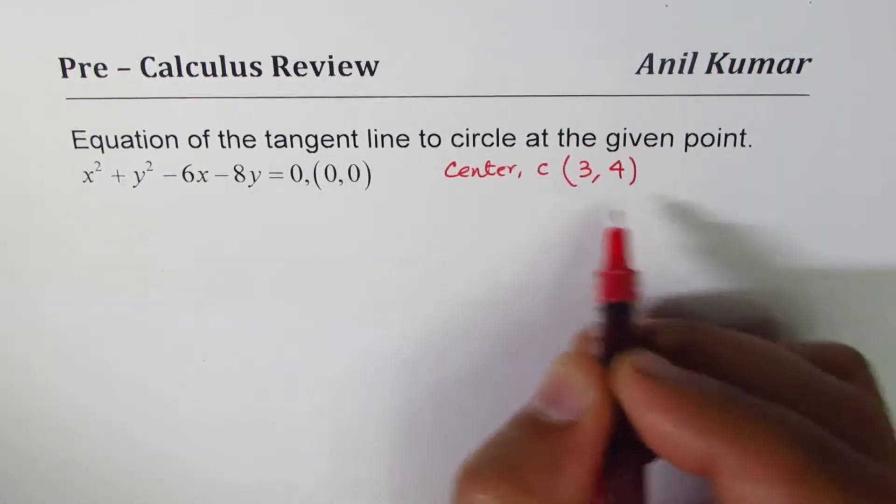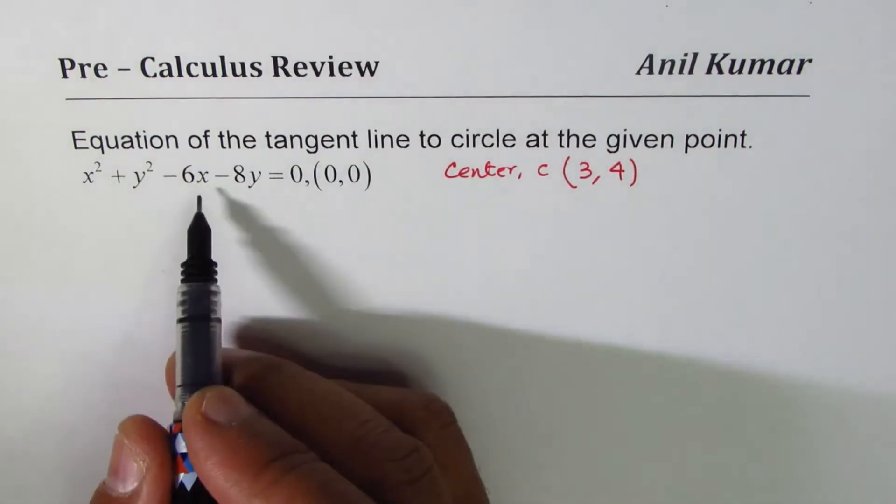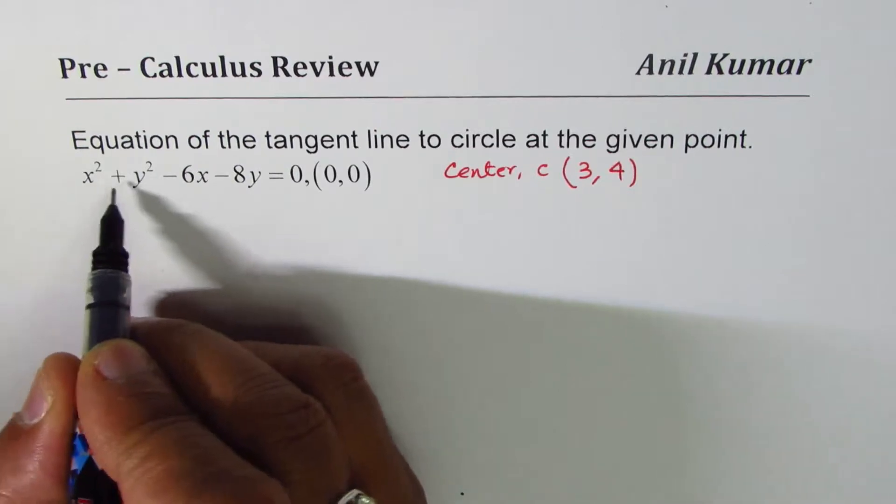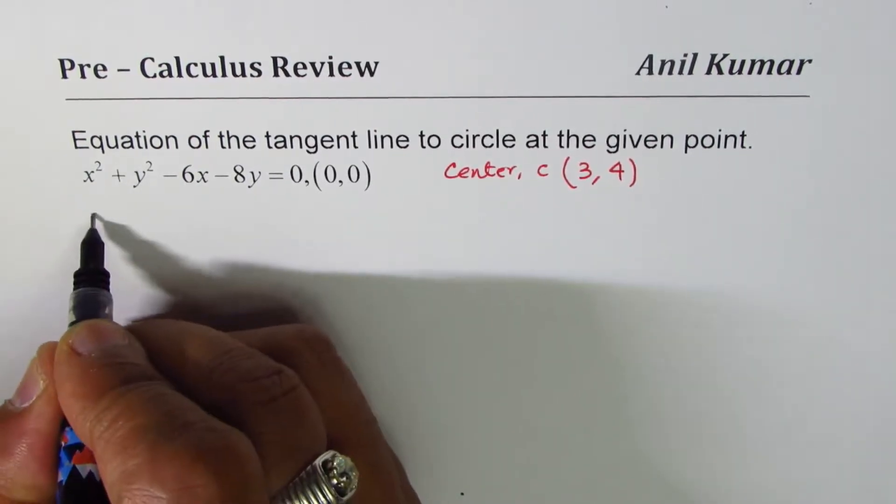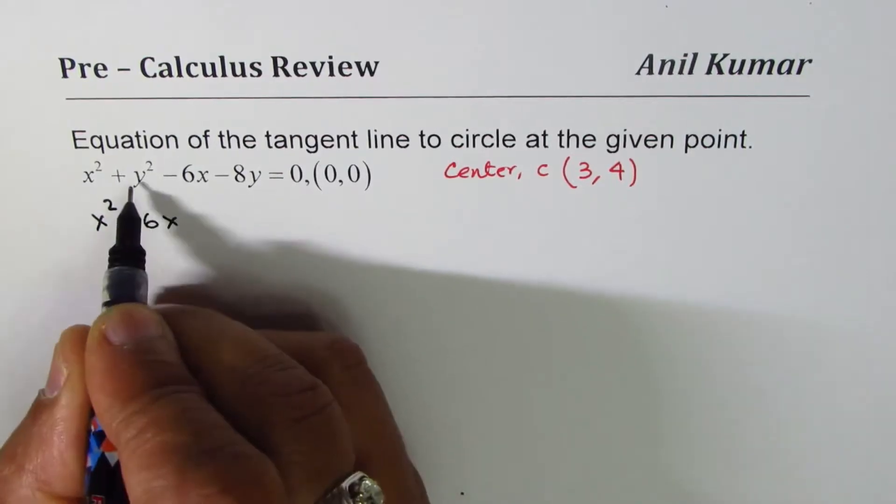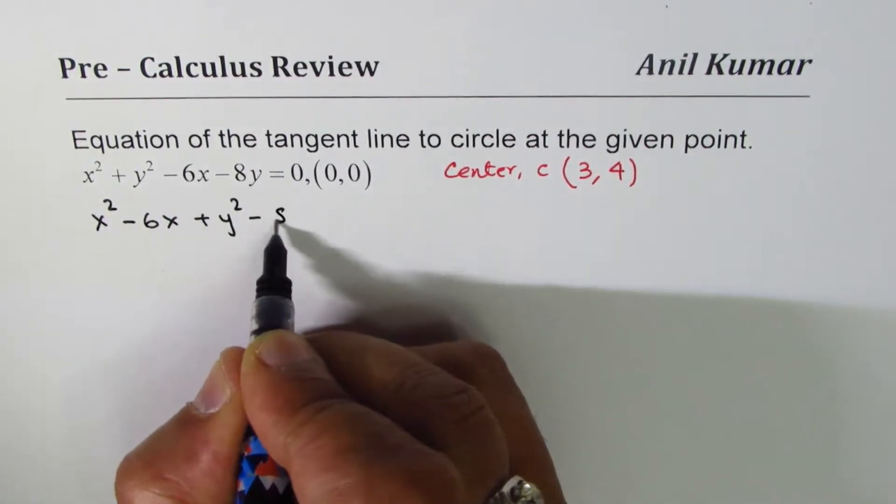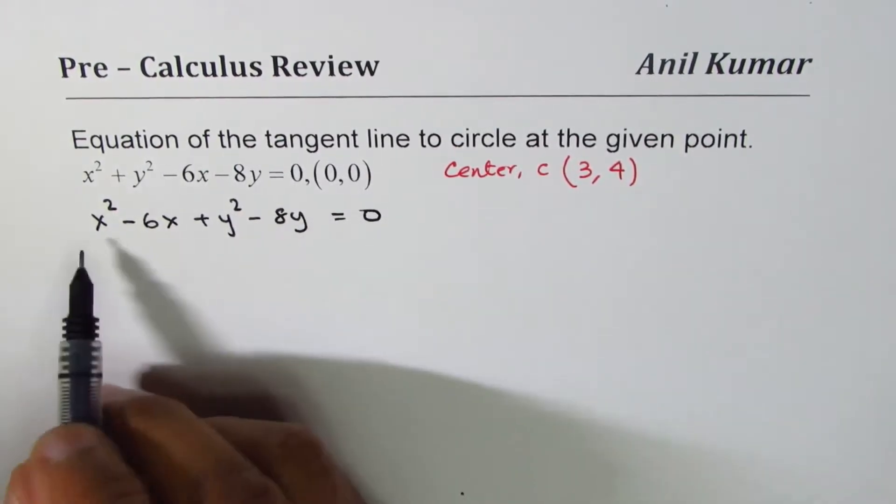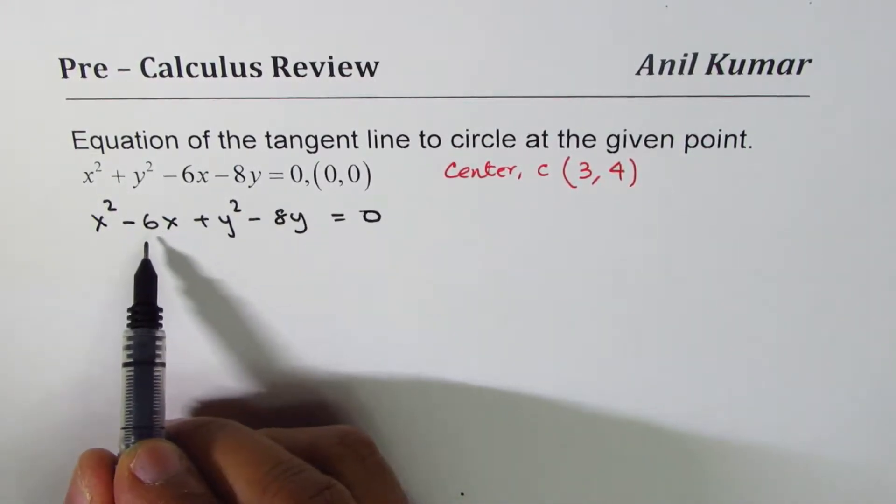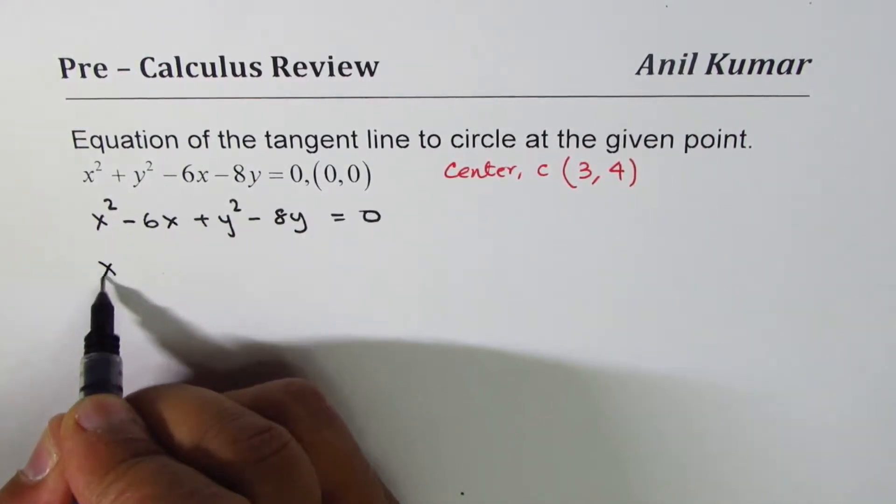Now how do you really find this value if you don't know this technique? You could actually complete the squares and find it. So let me show you the complete square process to find center. We have x² - 6x and y² - 8y = 0. To complete the squares we have to add square of half of the coefficient of x.